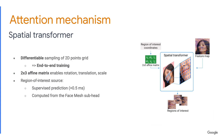We use a Spatial Transformer as an attention mechanism, which provides differentiable affine transformation. It enables end-to-end training and enriches the common feature map with lips and eye features.